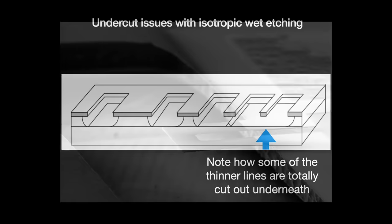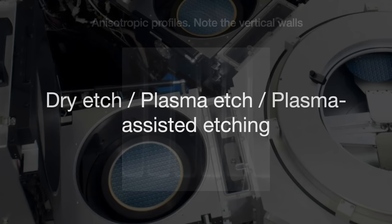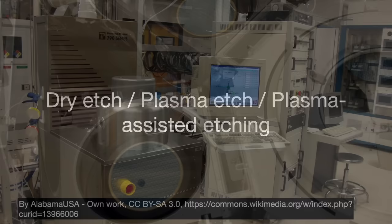Undercutting isn't always bad — for instance, you need to do it for something like MEMS, which have freestanding structures that you undercut to release. But here, it creates a loss of resolution. The problem became quite significant in the 1980s when feature sizes shrank beyond the 3 micron limit. We want to etch in one direction: anisotropic etching. This desire for anisotropy gave us what is called dry etch, plasma etch, or plasma-assisted etching. One prominent example is reactive ion etch.